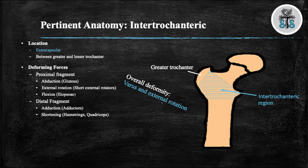The gluteus maximus, piriformis, superior gemelli, inferior gemelli, obturator internus, and quadratus femoris cause external rotation. The iliopsoas is the main contributor to flexion as it inserts on the lesser trochanter. The distal deforming forces are the adductors, the quadriceps, and the hamstrings.